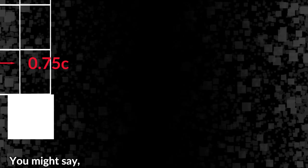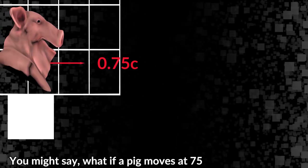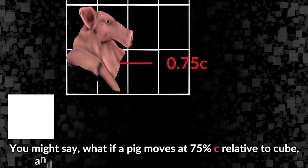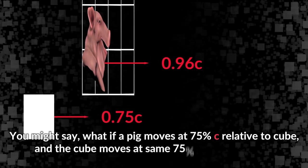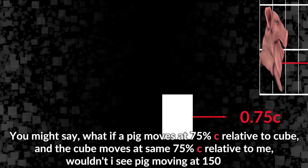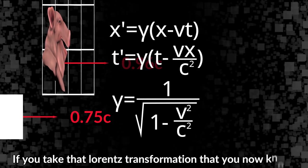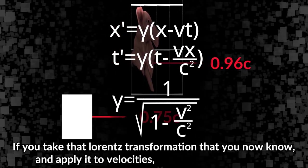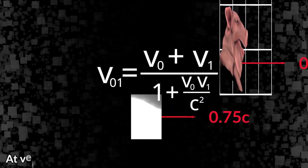You might say, 'What if a pig moves at 75% c relative to cube and the cube moves at same 75% c relative to me - wouldn't I see pig moving at 150% c?' What a predictable example. Your naivety does not fail to amuse me. No, your intuition does not work here. If you take that Lorentz transformation that you now know and apply it to velocities, you will get this formula.